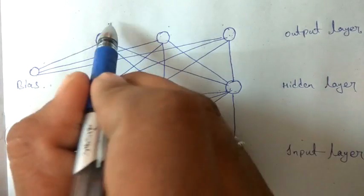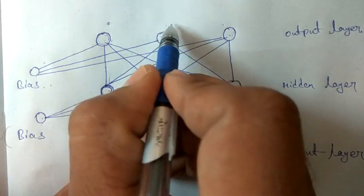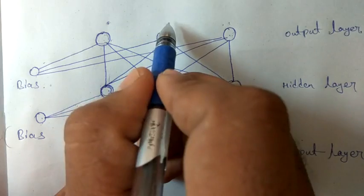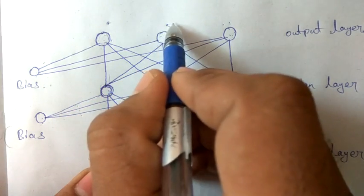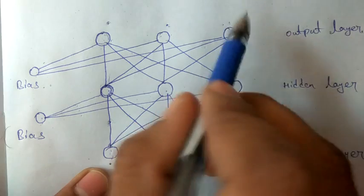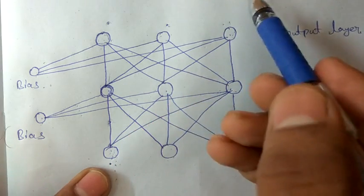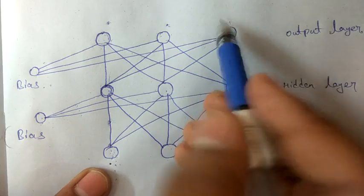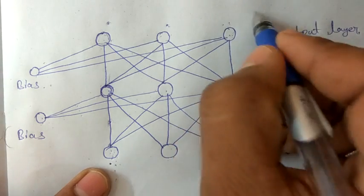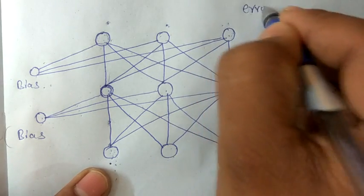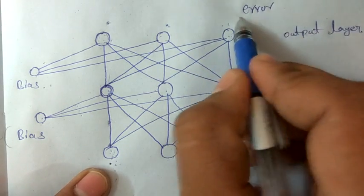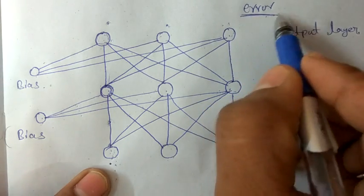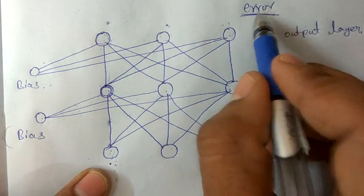The outputs we got here should be subtracted from our target, which is our expected output value, and we get the error. We need to minimize this error so that the network gives the correct output.